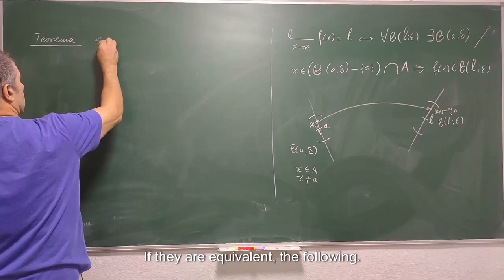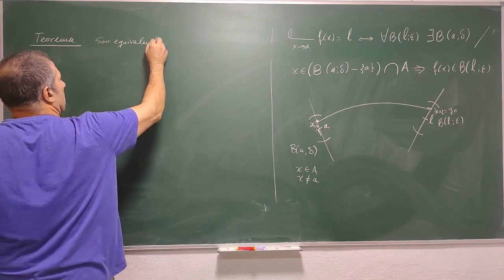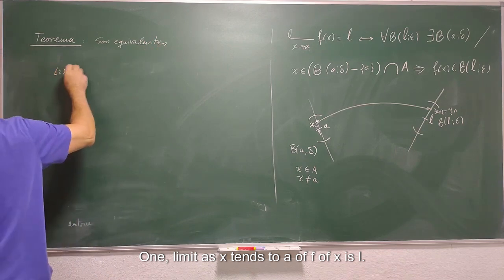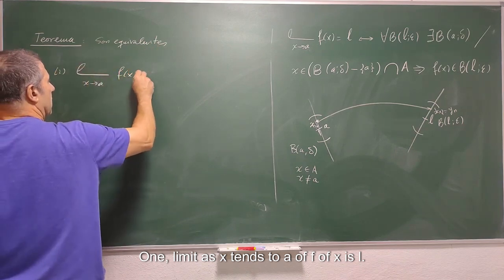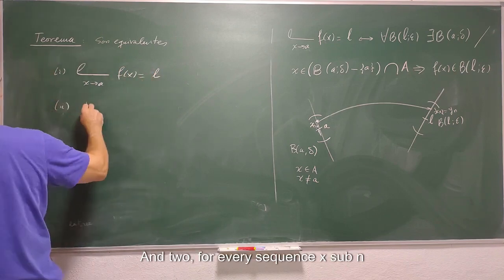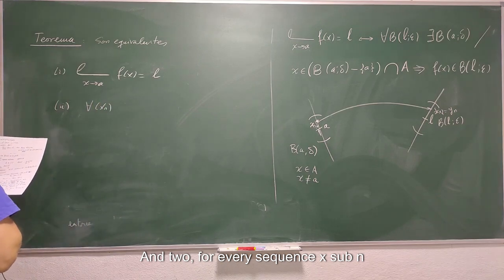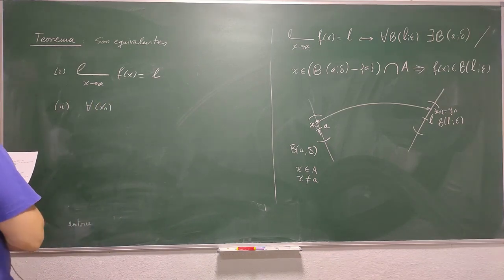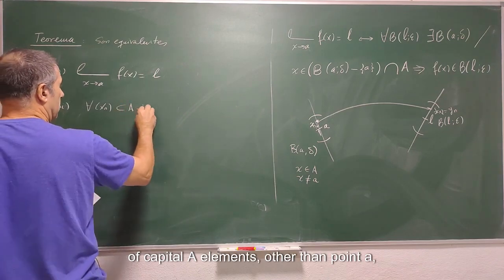If they are equivalent, the following. I'm going to give an equivalence. 1: Limit as x tends to a of f of x is L. And 2: For every sequence x sub n of capital A elements other than point a.